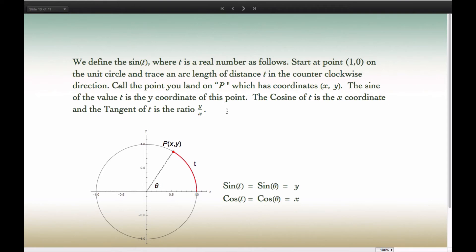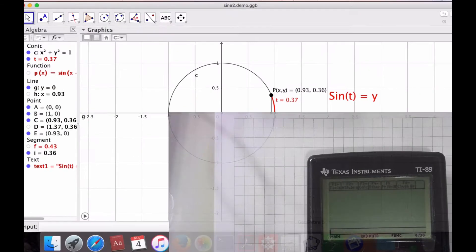So we define the sine of t, where t is a real number as follows. We start at this point on the unit circle (1, 0), and we travel a distance t, an arc length of t, and we land on this point here, p. The y-coordinate of that point is defined as the sine of t. The x-coordinate will give us the cosine of t. And notice, since it's a unit circle, t and theta have the same measure, so sine of t, sine of theta is equal to y.